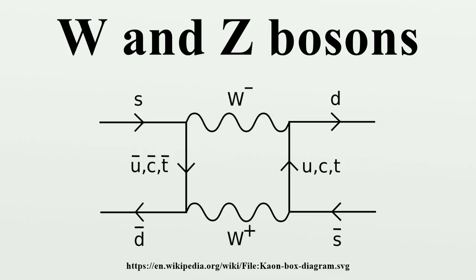Whenever an electron simply appears in such a chamber as a new free particle suddenly moving with kinetic energy, and moves in the direction of the neutrinos as the apparent result of a new impulse, and this behavior happens more often when the neutrino beam is present, it is inferred to be a result of a neutrino interacting directly with the electron.